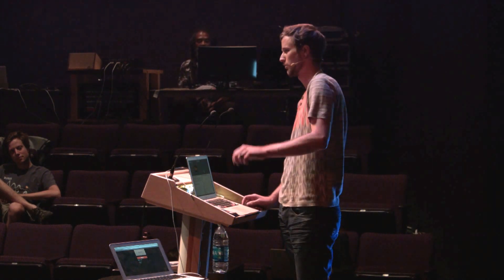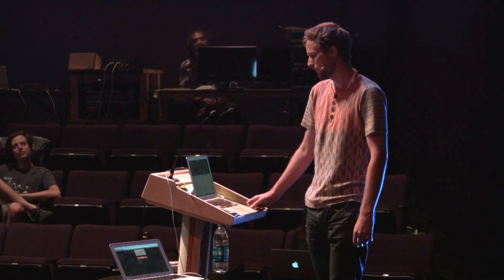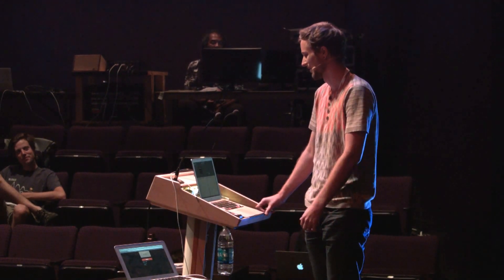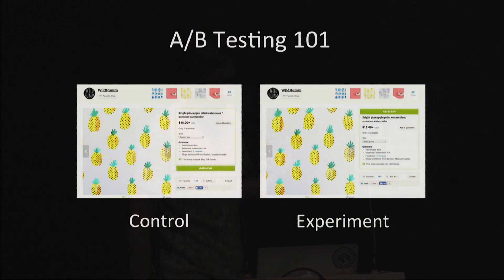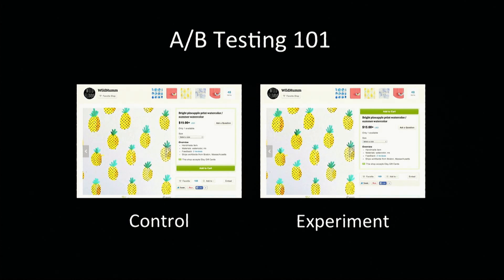I'm going to talk about the actual product changes and how we make sure we're doing things our users like. So this is A/B testing 201. For a quick 101: the basic concept is you have a theory, something you think is going to make your product better, and you show it to some random visitors. For example, there's an Etsy listing page where you can buy pineapple wallpaper, and maybe we'll move the Add to Cart button up to the top — that's our theory. We'll get more people pushing it and buying stuff. Let's run an experiment.